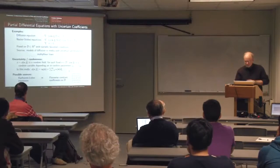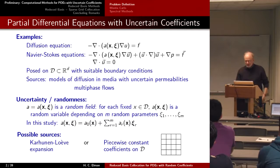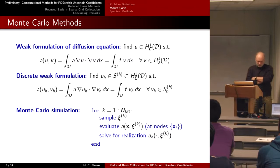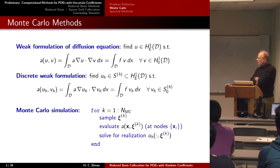In both of these cases, we can express the random field as a sum of components involving some finite number M of random variables. Let me begin with the classical way of approaching this problem of randomness, which is Monte Carlo methods.